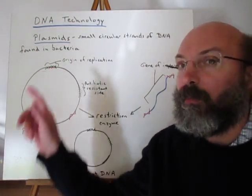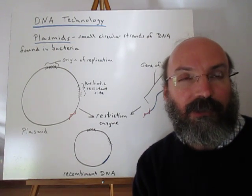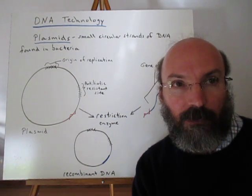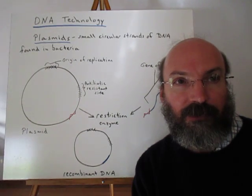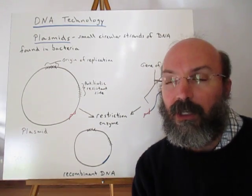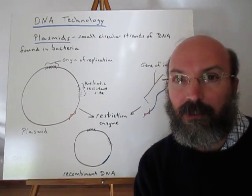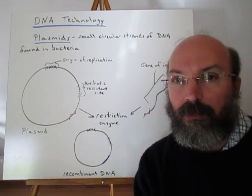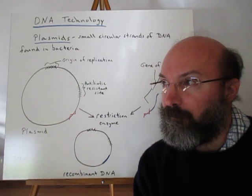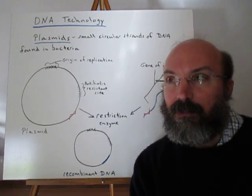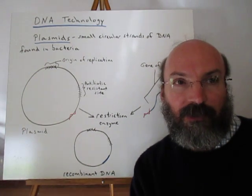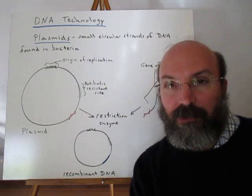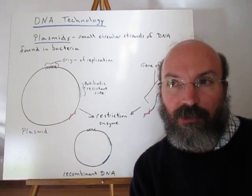Plasmids always have an origin of replication. This is necessary because the idea behind producing recombinant DNA is to get the bacteria to produce lots and lots of this particular gene for us. We want to make sure it can continue to replicate, so keeping the origin of replication intact in the plasmid is important. The other gene we like to have in these plasmids is some type of antibiotic resistance site, so you can screen these plasmids to make sure they're containing the gene of interest.